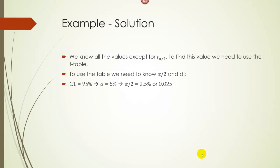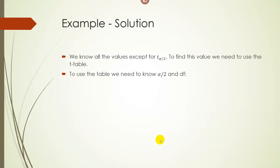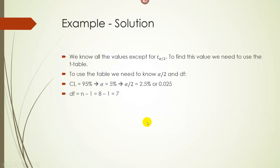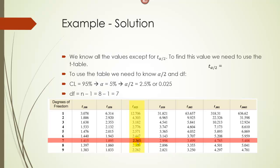To use the T table, we need alpha over 2 and degrees of freedom. For a 95% confidence interval, alpha is 1 minus 0.95 equals 0.05, and alpha over 2 is 0.025, so we go down the 0.025 column. Our sample size is 8, so degrees of freedom equals 8 minus 1 equals 7. Going to the row for df equals 7 and the column for 0.025, we get T-alpha/2 equals 2.365.